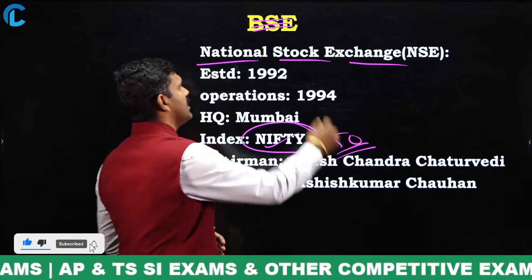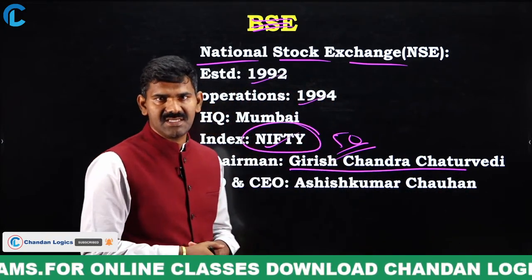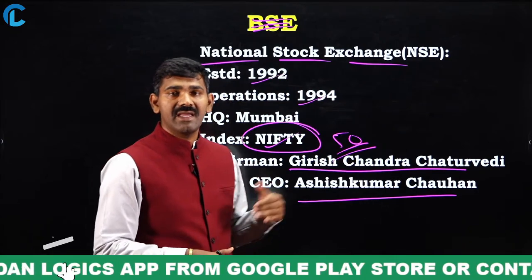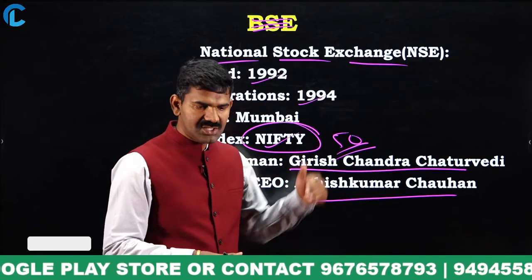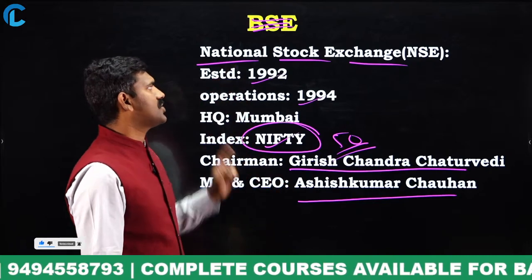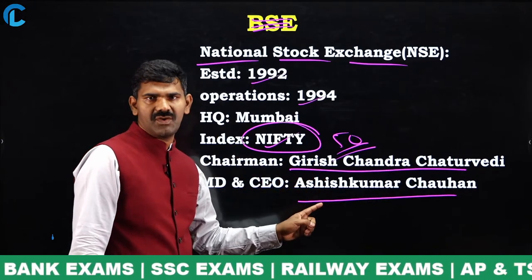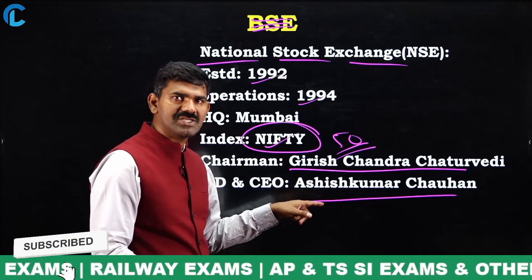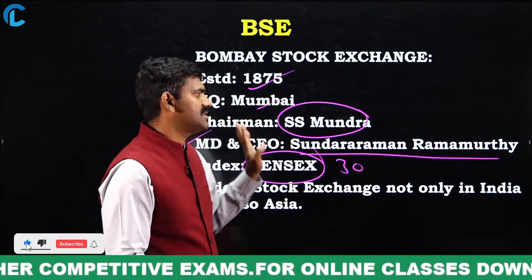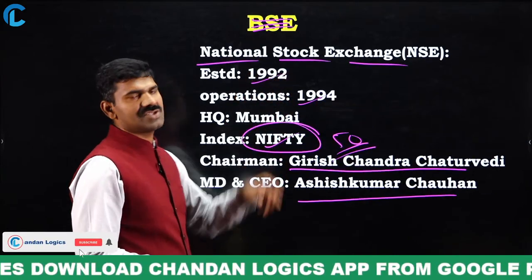National Stock Exchange was established in 1992 and started operations in 1994, with headquarters in Mumbai. Girishchandra Chaturvedi is the chairman, and Ashish Kumar Chauhan is the MD&CEO. The index of NSE is Nifty (50 stocks). To recap: Ashish Kumar Chauhan moved from BSE to NSE, and Sundar Raman Ramurthy became the new MD&CEO of BSE. Three stock exchanges discussed: India International Exchange, Bombay Stock Exchange, and National Stock Exchange.